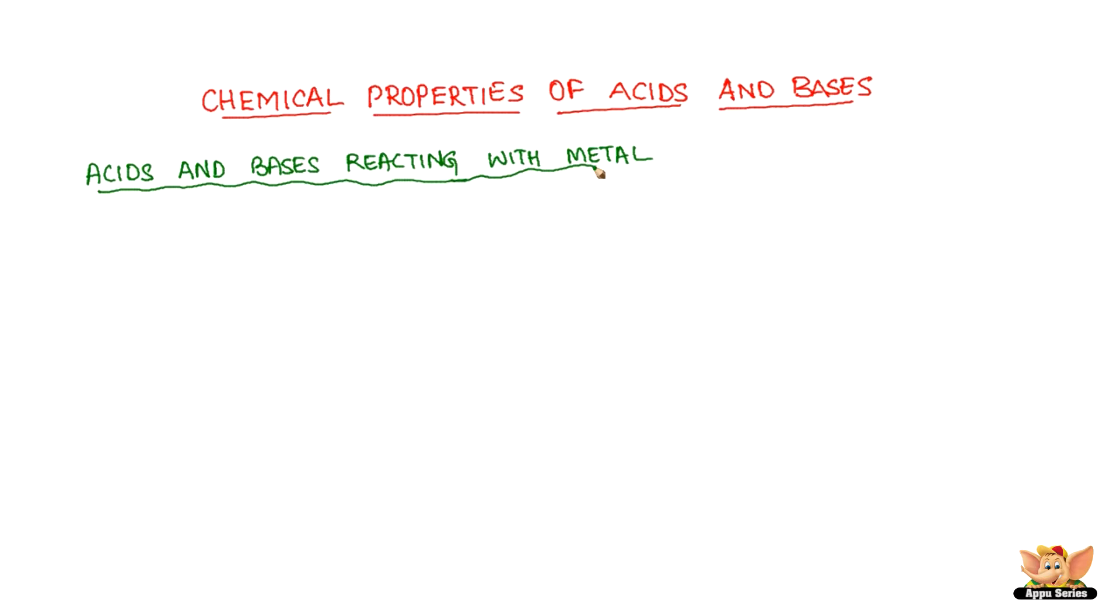Acids and bases reacting with metal. Acids react with metals giving salt and hydrogen gas. Let's see an example of such a reaction. When dilute sulphuric acid reacts with the metal zinc, we get zinc sulphate, which is a salt, with the liberation of hydrogen gas.